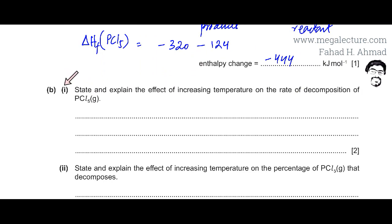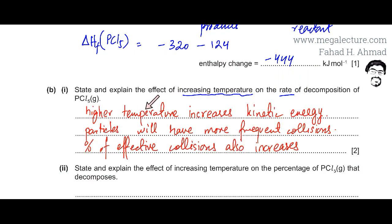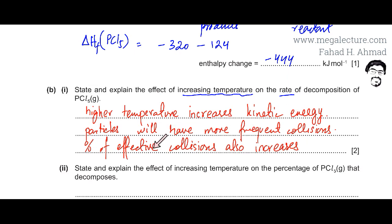The next part states: state and explain the effect of increasing temperature on the rate of decomposition of PCl5. This question is not about equilibrium — it is about the rate of the reaction. When you increase temperature, higher temperature increases kinetic energy, so particles travel at a faster speed and have more frequent collisions. The percentage of effective collisions also increases — collisions are more forceful and there are more chances of a successful reaction. So higher temperature gives more frequent and more effective collisions.